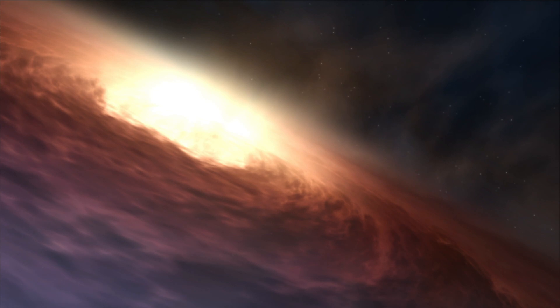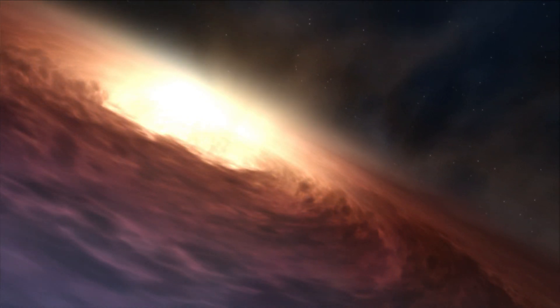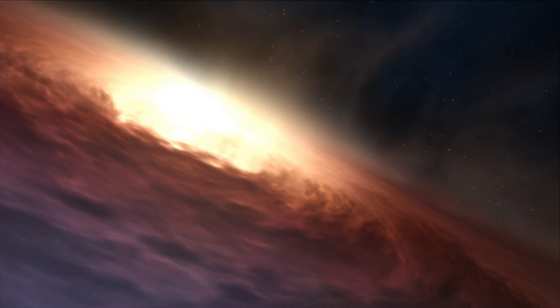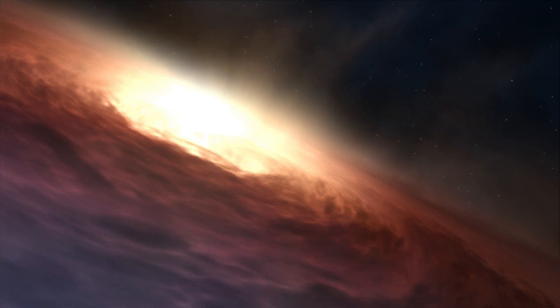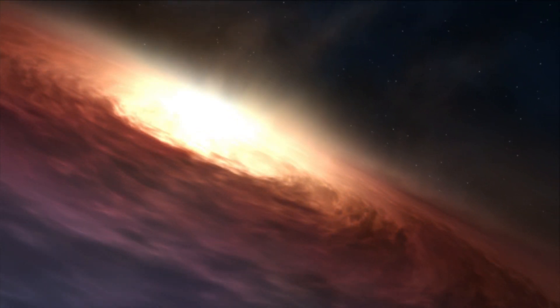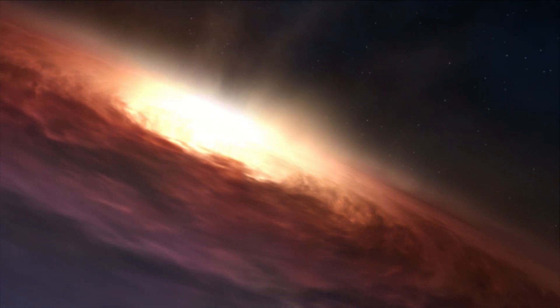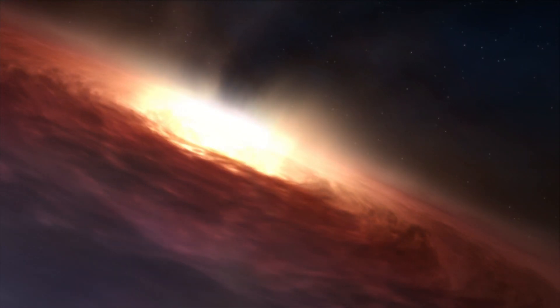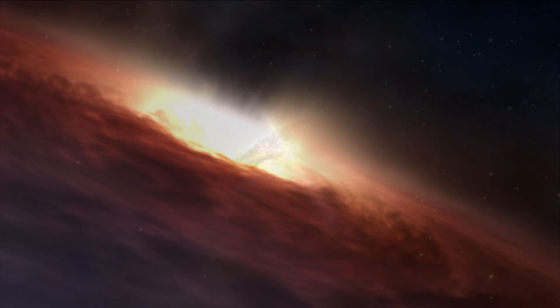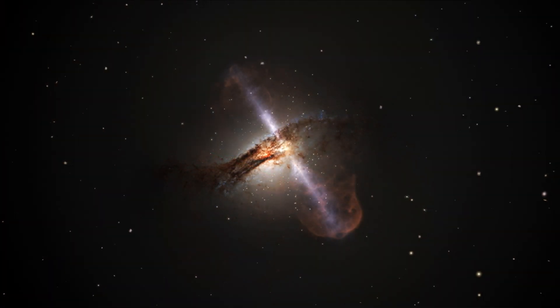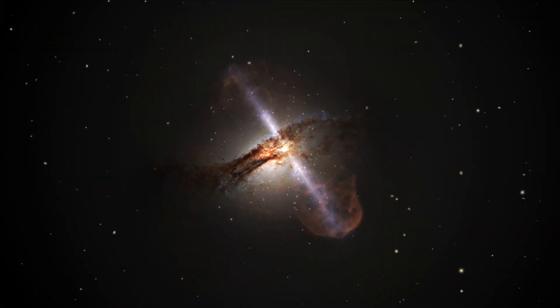Black holes are also messy eaters, which often betrays their locations. As they sip on surrounding stars, their massive gravitational and magnetic forces superheat the in-falling gas and dust, causing it to emit radiation. Some of this glowing matter envelops the black hole in a whirling region called an accretion disk.